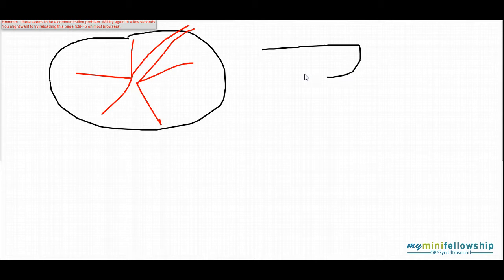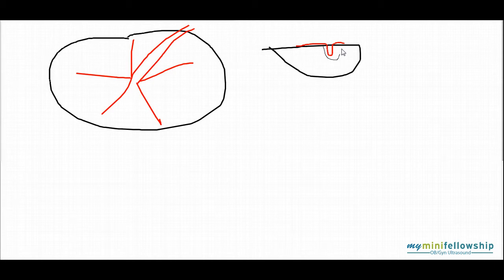If you look at it in cross-section, there will be a fetal vessel running along the top, diving down in, and coming back out. It's in these little structures where there's diffusion of oxygen and nutrients across the membrane — the mother's blood is filling the placenta, and the baby's blood is filling these vessels. The point is: there's fetal blood inside these vessels.